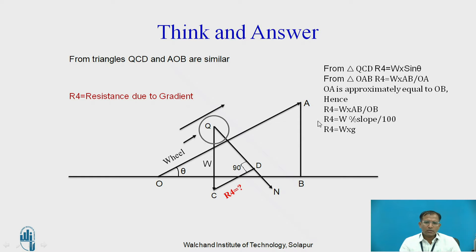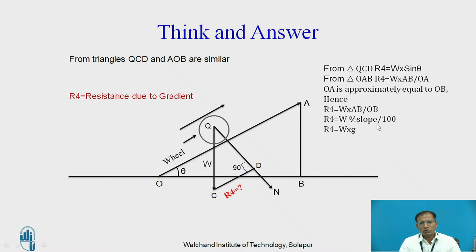Now you can take W into AB upon OB, that is tan theta, which is nothing but the slope. The slope is always expressed as 1 in X — that is 1 vertical and X horizontal. The slope may also be expressed in percentage; if it is 2 percent or 3 percent, you can calculate AB by OB accordingly. Taking 2 percent, it becomes W into 2 by 100. Finally, R4 becomes W into G.